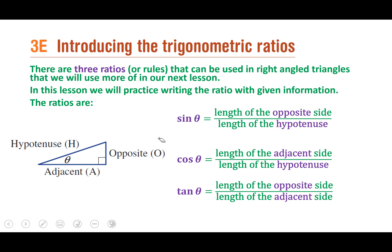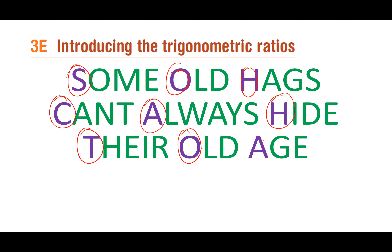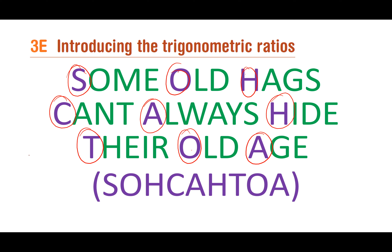This is one of my favourite things — 'Some Old Hags Can't Always Hide Their Old Age,' or SOH-CAH-TOA. This is a mnemonic that helps you remember which ratio to use for which sides. SOH: Sine, Opposite, Hypotenuse. CAH: Cosine, Adjacent, Hypotenuse. TOA: Tan, Opposite, Adjacent.